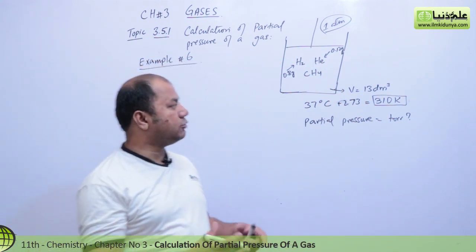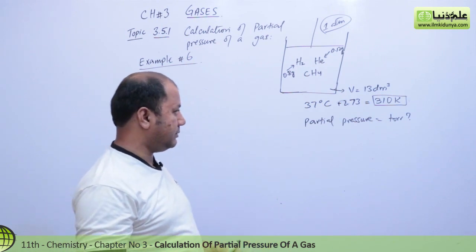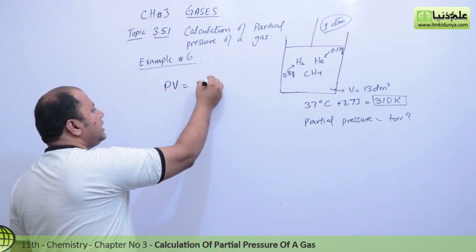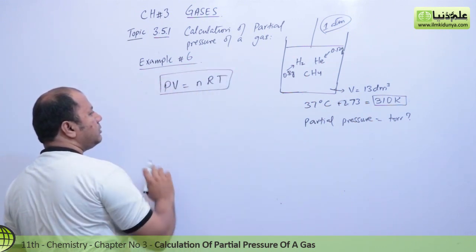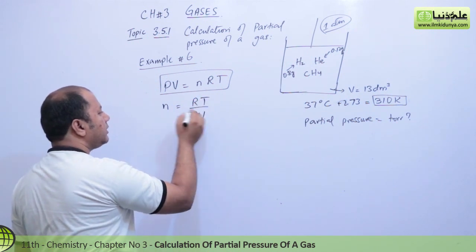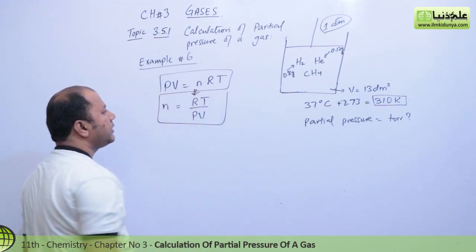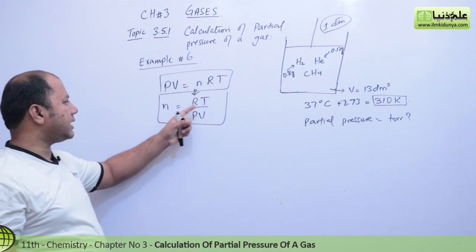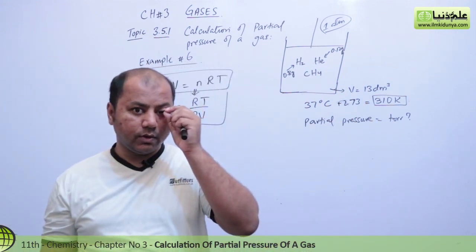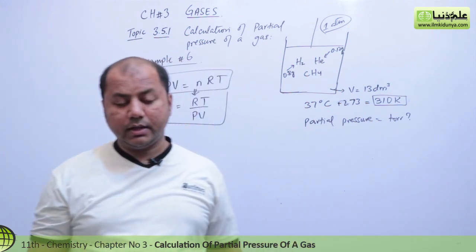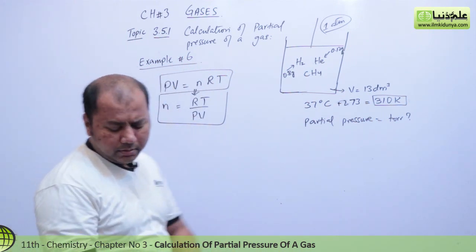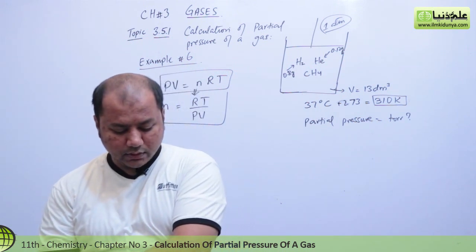First of all, let's find the total number of moles. We'll use the general gas equation: PV = nRT. We want to calculate n, so we rearrange it to n = PV/RT. The general gas constant R is 0.0821 dm³·atm·K⁻¹·mol⁻¹, pressure is in atm, and we can convert to torr if needed.